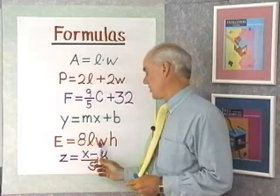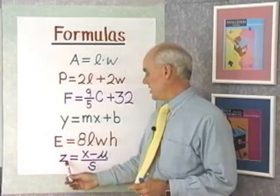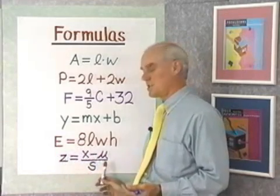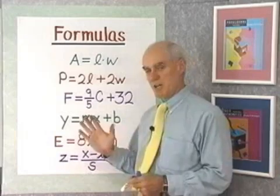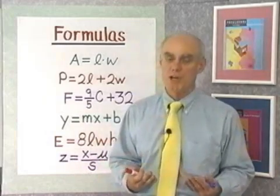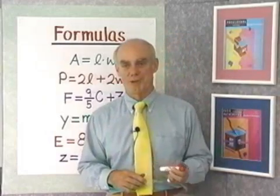E equals 8LWH is the formula for the energy in an ocean wave. And Z equals X minus mu, this is the Greek letter mu, over S, is the formula for a Z-score in statistics. There's many, many formulas in mathematics. What links them all together is that there are equations that involve more than one variable. Let's see some of the problems that we can work involving formulas.